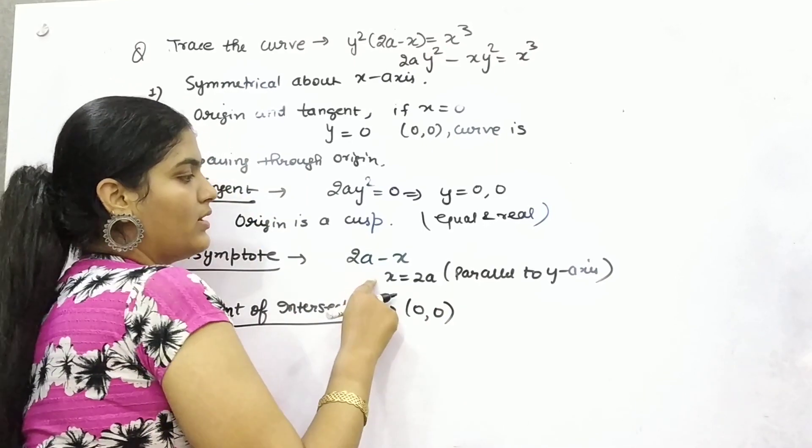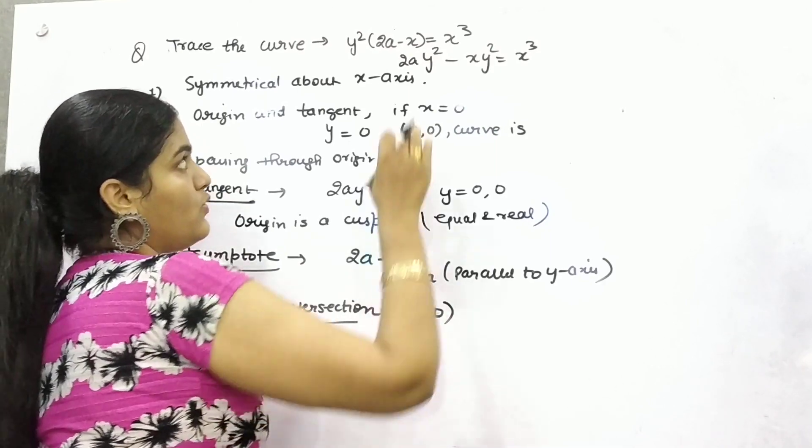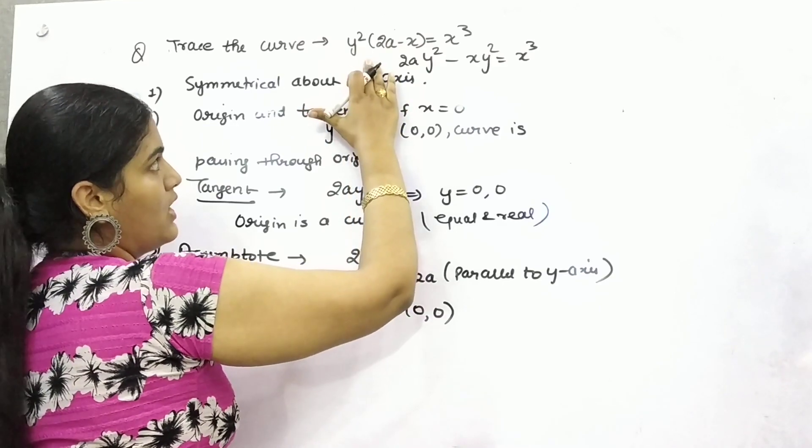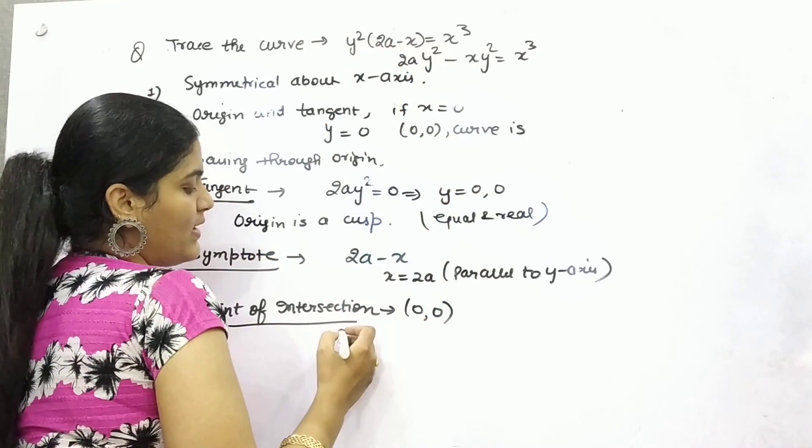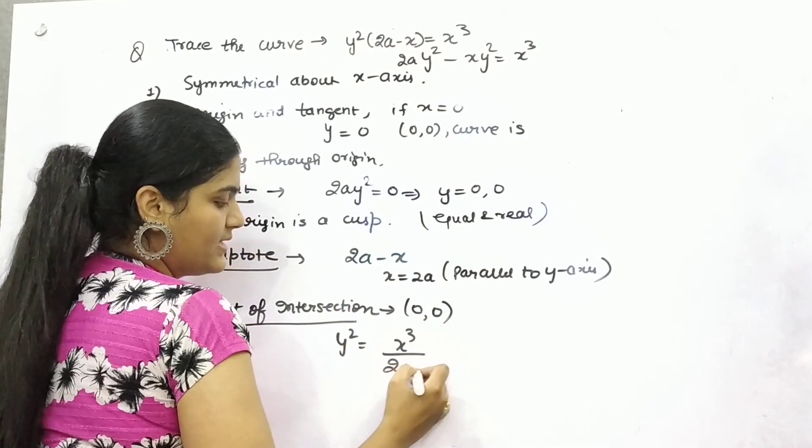And secondly, because your asymptote is 2a, if you find out the value of y in terms of x or the value of x in terms of y, what you can get? So y² will be x³/(2a - x).